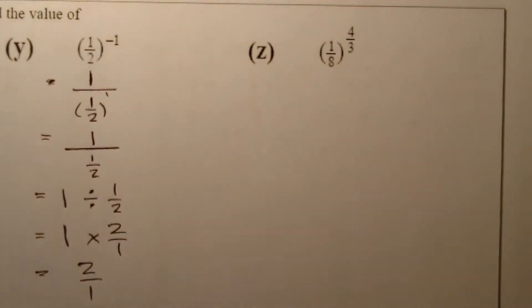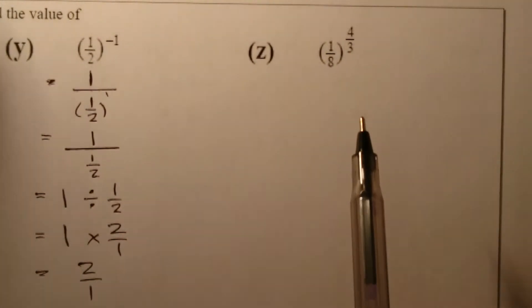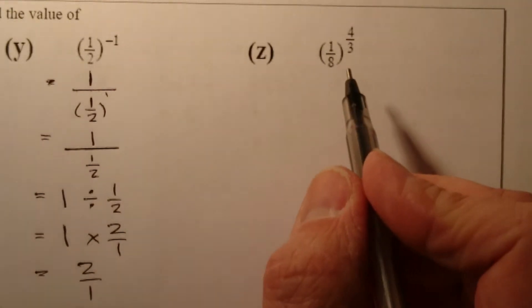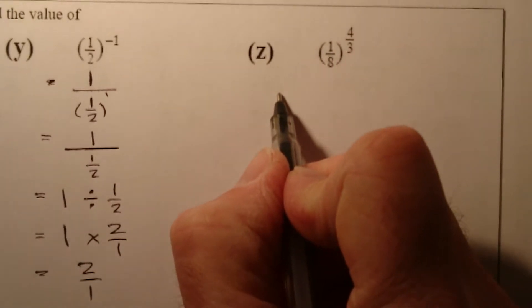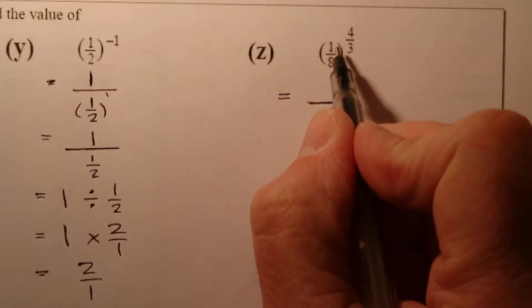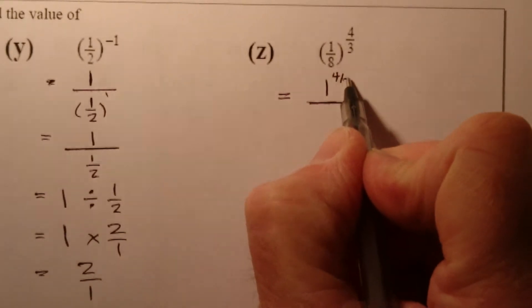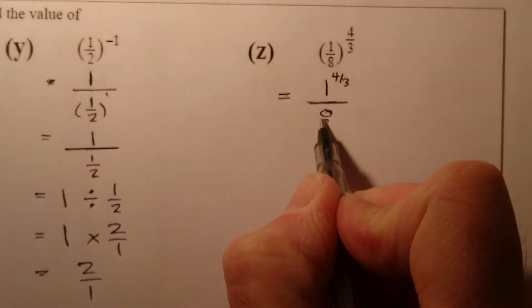Last question, so I've got one eighth to the power of four over three. First thing I'm going to do with that is use one of the properties. For this one here, I'm going to put one to the power of four over three and I'll put eight on the bottom to the power of four over three.